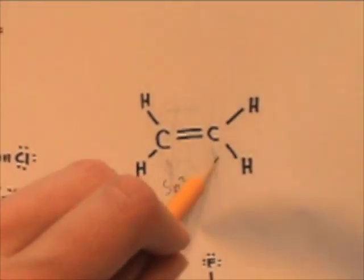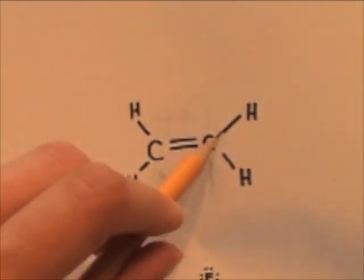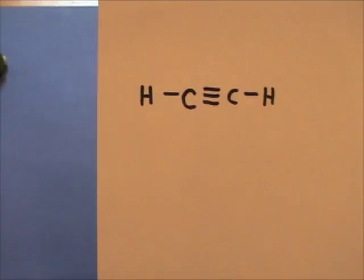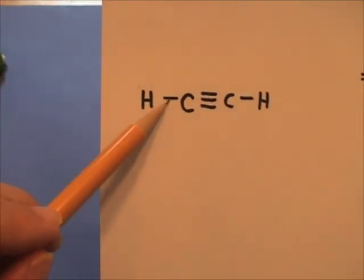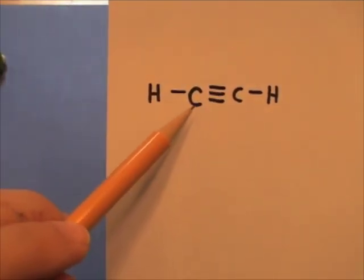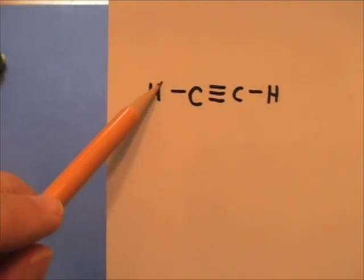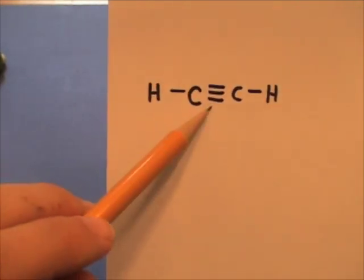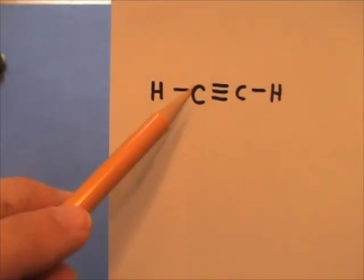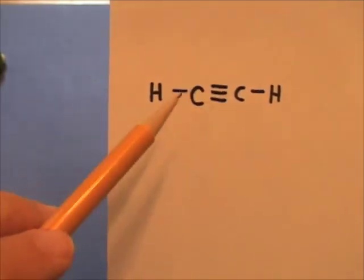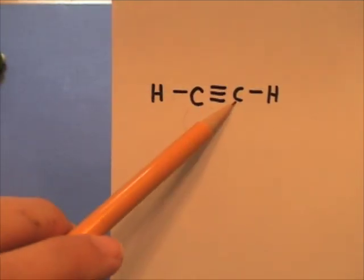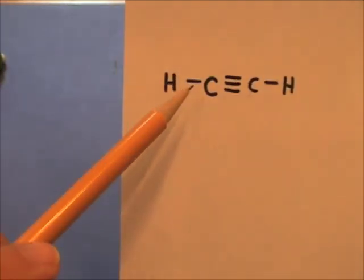This central carbon is also sp2 hybridized, so it has that p orbital allowing it to form one sigma bond and a pi bond. This carbon is predicted to be a linear geometry — two electron regions getting as far away as possible — and is sp hybridized, with two sp orbitals and two overlapping p orbitals forming these double bonds. So this carbon is sp linear, and the overall molecule is linear.